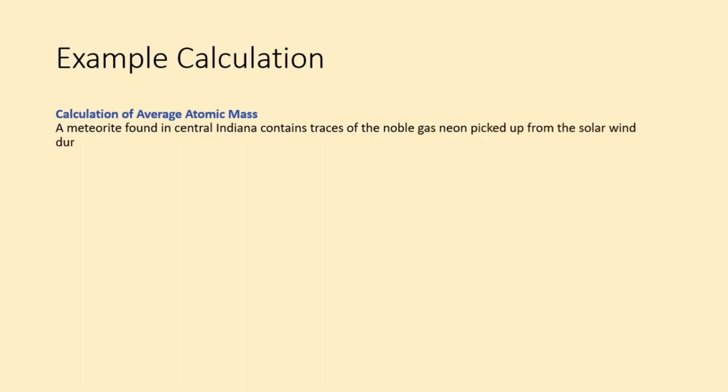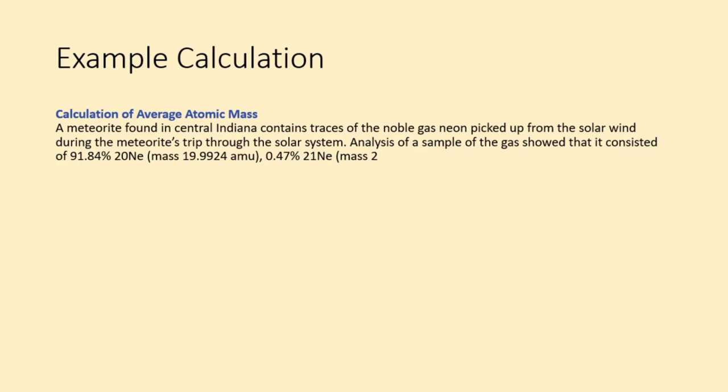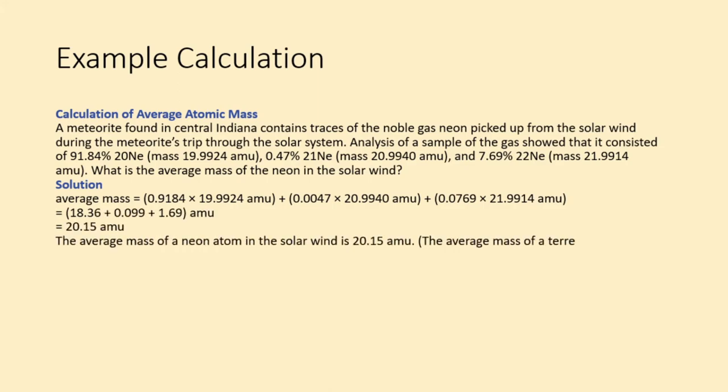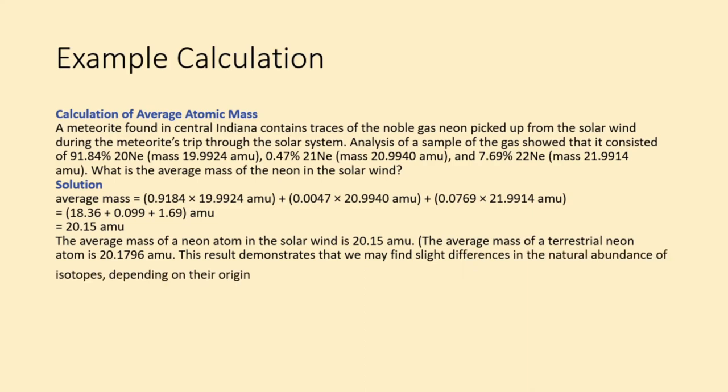Calculation of average atomic mass. A meteorite found in central Indiana contains traces of the noble gas neon picked up from the solar wind during the meteorite's trip through the solar system. Analysis of a sample of the gas showed that it consisted of 91.84% 20Ne, mass 19.9924 amu, 0.47% 21Ne, mass 20.994 amu, and 7.69% 22Ne, mass 21.9914 amu. What is the average mass of the neon in the solar wind?